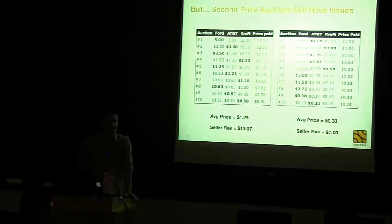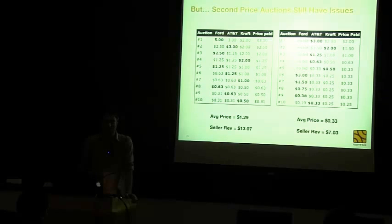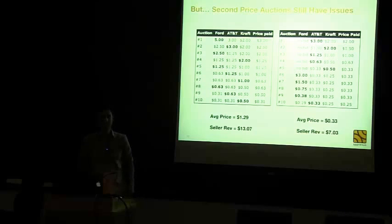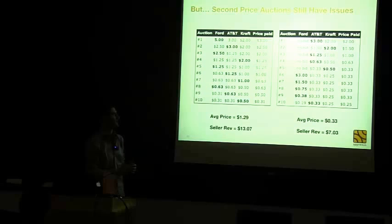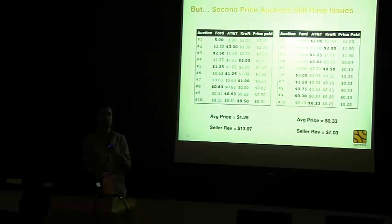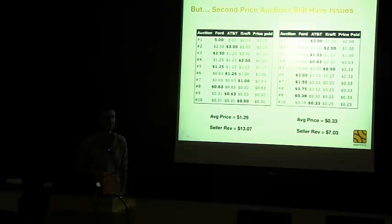Q: One solution would be to have a minimum bid and minimum separation between bids to discourage collusion. A: Right, that's one methodology. There's also some research on random nth-price auctions — what would happen if you ran a third-price or fourth-price auction, and what if buyers don't actually know which price level they're being reduced to? That significantly changes the dynamics and actually disincentivizes things like collusion, though I don't think it's been tried very well in practice.